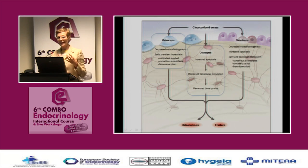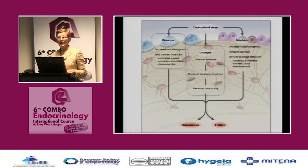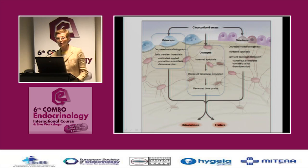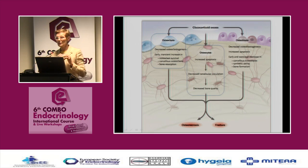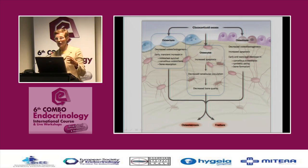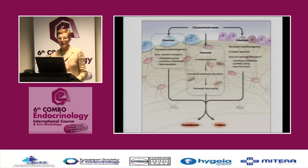At the beginning, glucocorticoids stimulate bone resorption by stimulating osteoclasts. There is increased production of sclerostin that blocks bone formation, and increased production of RANK ligand which stimulates osteoclastogenesis. With time, glucocorticoids no longer stimulate osteoclastogenesis but prolong the lifetime of osteoclasts — so the number stays the same, and osteoclast survival is increased. The most affected are osteoclasts in trabecular cancellous bone, so vertebrae are mostly prone to fractures.